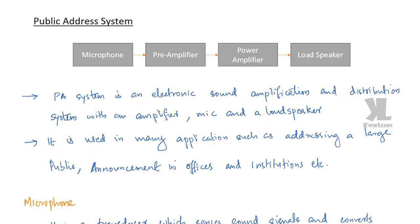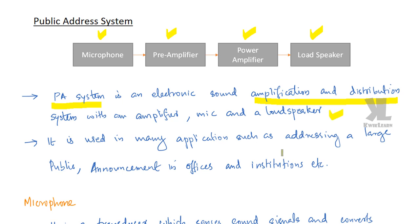In this section we are going to discuss about the block diagram of a public address system. A public address system will have a microphone, a pre-amplifier, a power amplifier, and finally a loudspeaker. A PA system is an electronic sound amplification and distribution system with an amplifier, microphone, and a loudspeaker.